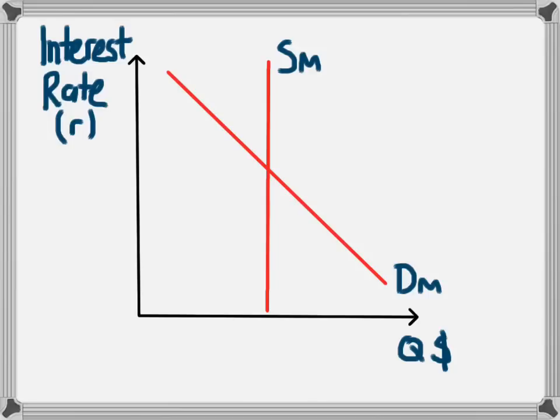The interaction of supply and demand for money will leave us with an equilibrium level of interest. The symbol for an interest rate is just lower case r, and this will be the equilibrium level of interest in the economy.